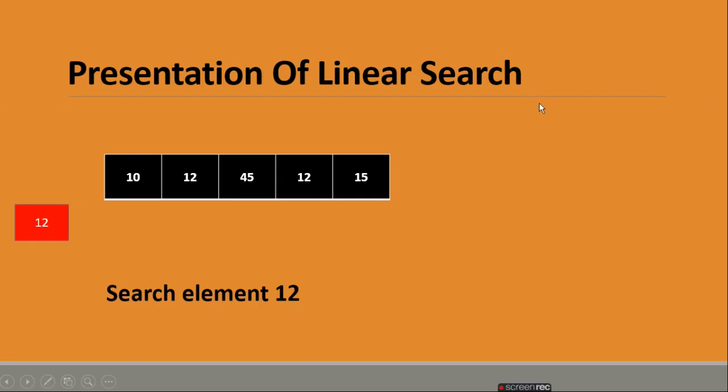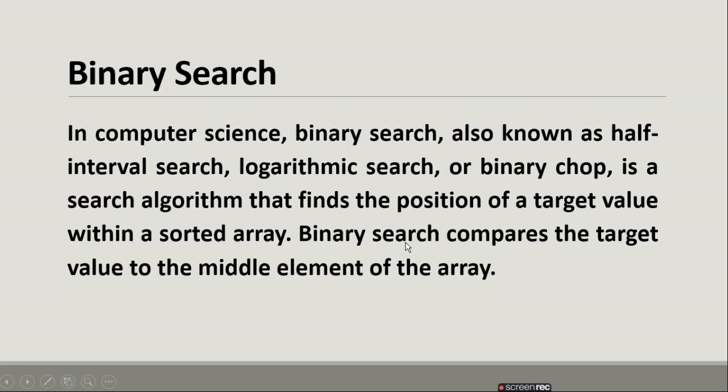Presentation of linear search. Now linear search, how to work? This array has two times 12 and we have to search one by one. So we will search for the first 12 and the second 12. So the first 12 is your first position and the third position is your third position. Because the array starts from zero. So this is why the first position is 12 and the third position is 12. So search one by one and work.